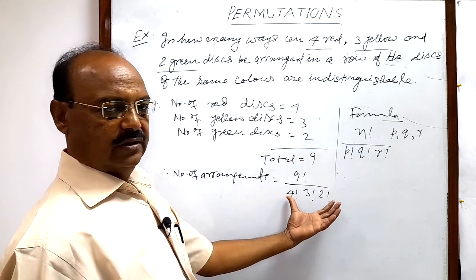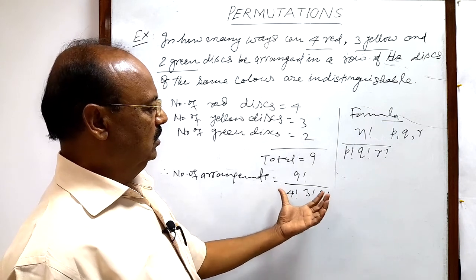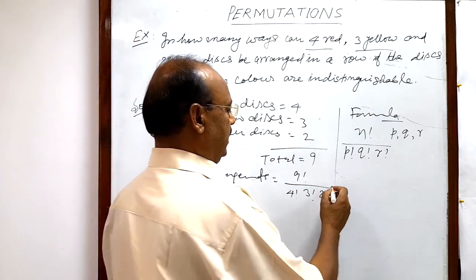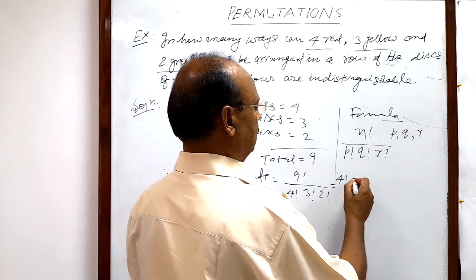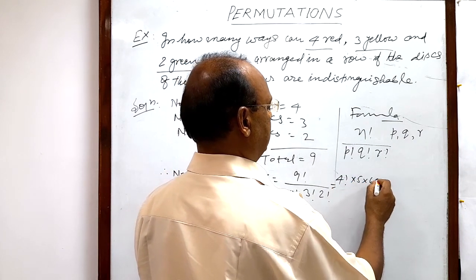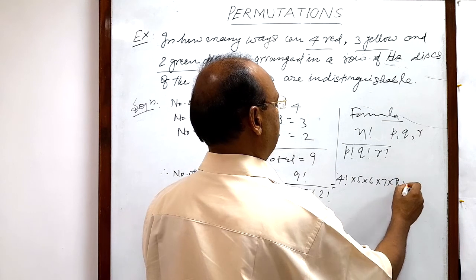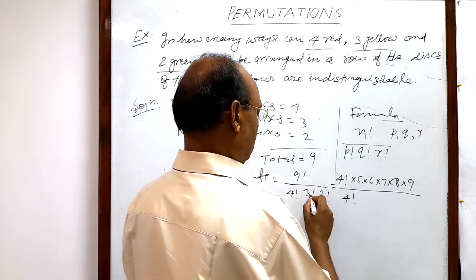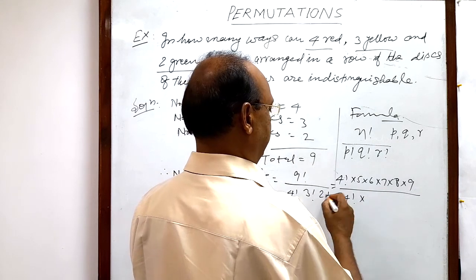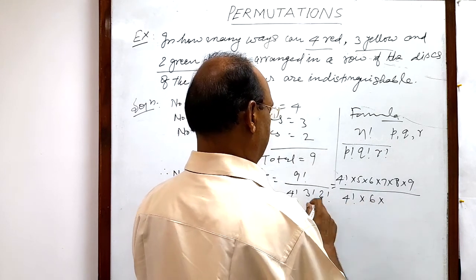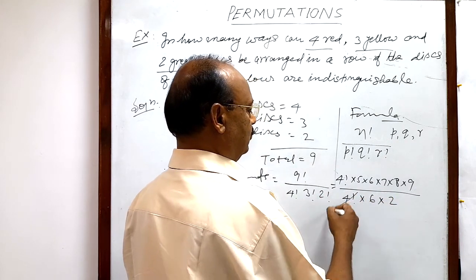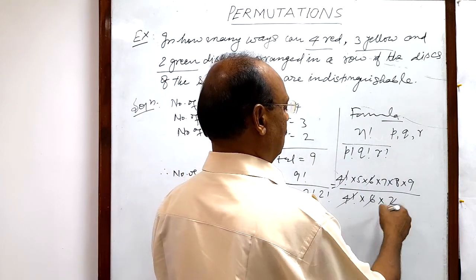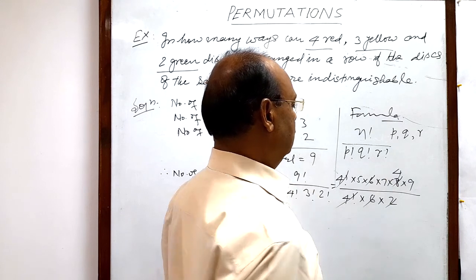By solving this expression, we will get the answer. 9 factorial can be written as 4 factorial times 5 times 6 times 7 times 8 times 9. The denominator has 4 factorial, 3 factorial which is 6, and 2 factorial which is 2. So 4 factorial cancels out, 6 cancels out, and 2 cancels with 8.